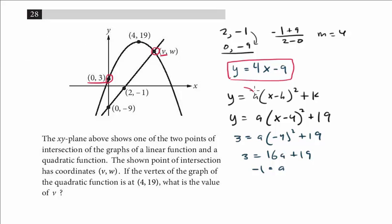You can't just assume this is always going to be 1 or -1. It was -1 here, but you really have to plug it in to make sure. So the equation for the quadratic is y equals -(x - 4)² + 19. This is the equation, and now I just set them equal.